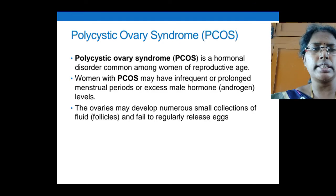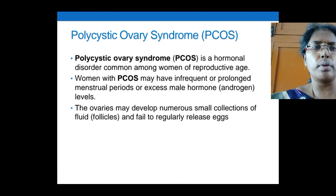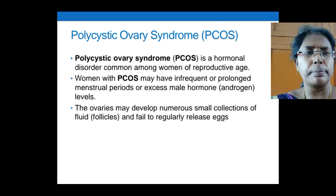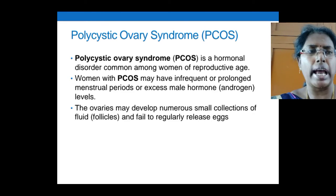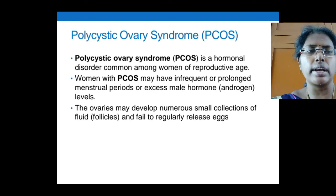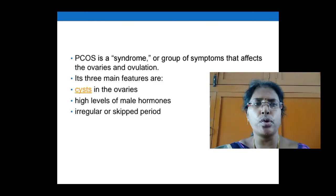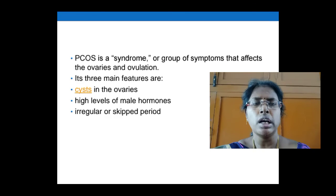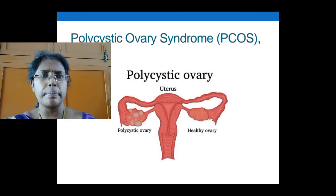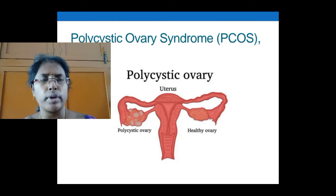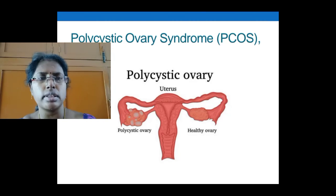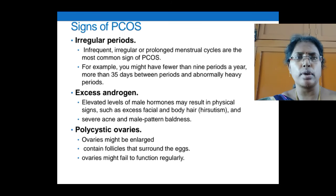The next condition is polycystic ovary syndrome (PCOS). It is a hormonal disorder most common among women of reproductive age. Women with PCOS may have infrequent or prolonged menstrual periods, possibly due to excess male hormone androgen. The ovaries may develop numerous small fluid-filled follicles and fail to regularly release eggs. The three main features of PCOS are cysts in the ovaries, high levels of male hormone, and irregular or skipped periods. In this image you can see an unhealthy ovary compared to a normal ovary, and the polycystic ovary shows numerous cyst formations.